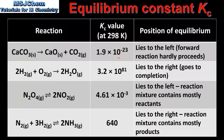This very small value of Kc tells us that the equilibrium lies to the left and the forward reaction hardly proceeds. The second reaction is that between hydrogen and oxygen to produce water vapor. The value of Kc is 3.2 times 10 to the power of 81. This very large value for Kc tells us that the equilibrium lies to the right and that the reaction goes to completion.